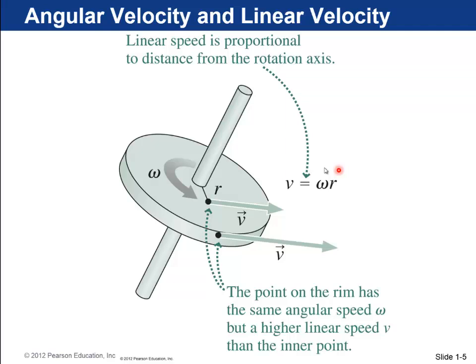The linear velocity v of particles on a rotating object is related to omega times r. What that means is that as things get further away from the axis, they're all traveling at the same angular velocity omega, but the linear velocity v goes up proportionally to r. It's zero right at the axis and fastest right out at the rim.